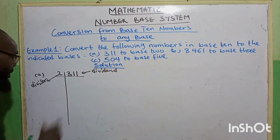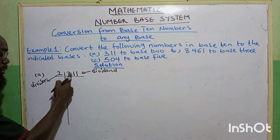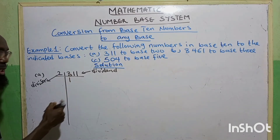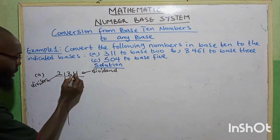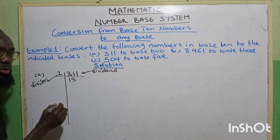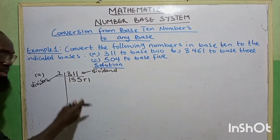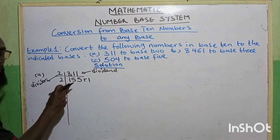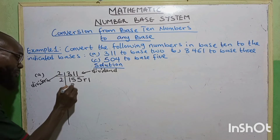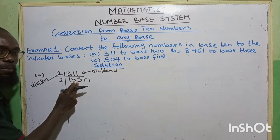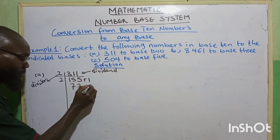Now let's start. 2 goes into 3, we have 1 — remainder 1. Putting 1 in front, making 11. 2 goes into 11, we have 5 — that is 5 times 2 is 10, remainder 1. Putting 1 in front, making 11 again. 2 goes into 11, we have 5 — remainder 1. We keep tracking our remainder. 2 cannot go into 1, so take it to the 5, making 15. 2 goes into 15, we have 7 — that is 14, remainder 1. Put 1 here, making 15. 2 goes into 15, we have 7 — remainder 1.